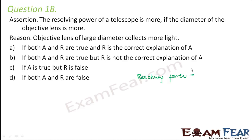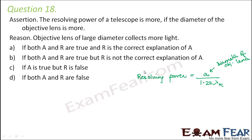Now how do we calculate it? It is equal to A divided by 1.22 lambda, where A is the diameter of the objective lens of the telescope and lambda is the wavelength of light used. Looking at this expression, it is clear that if the diameter of the objective lens is more, then the resolving power of the telescope will also be more. So obviously the assertion is correct.